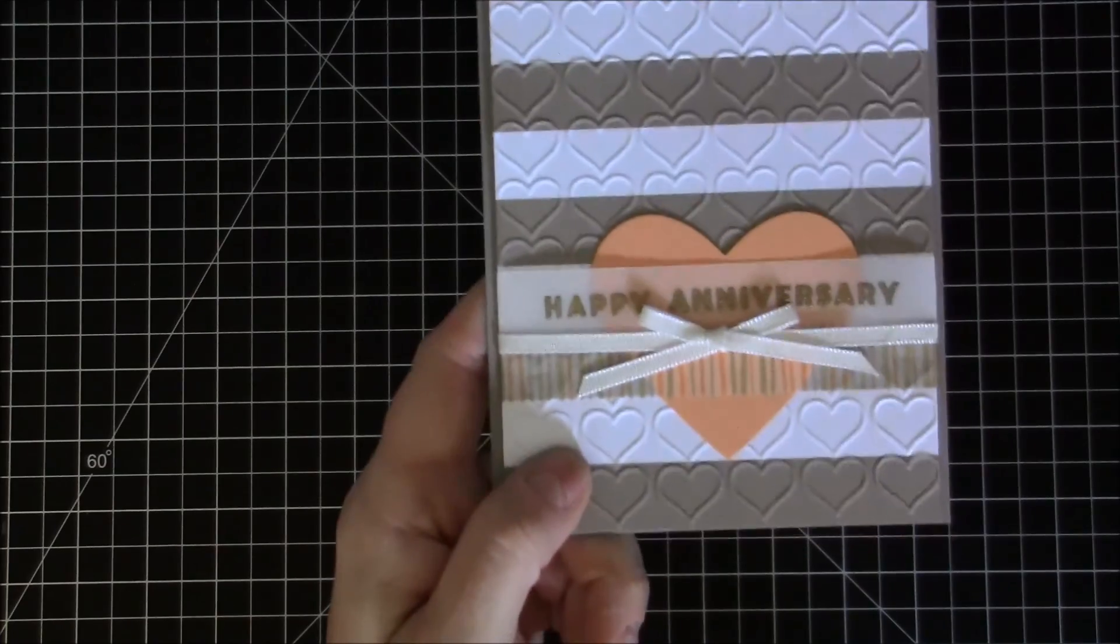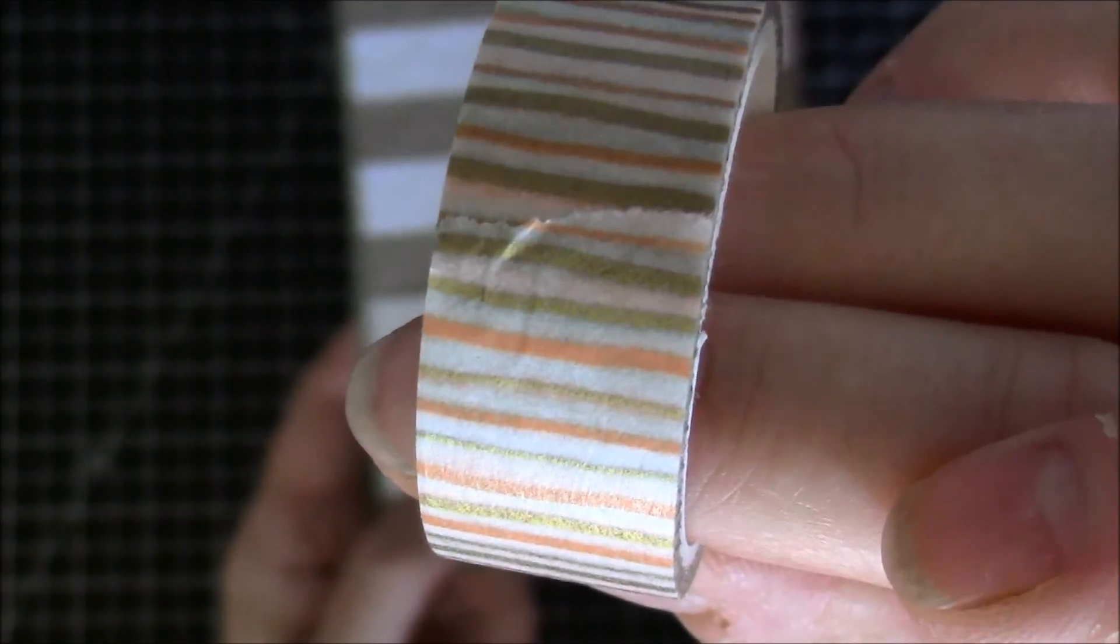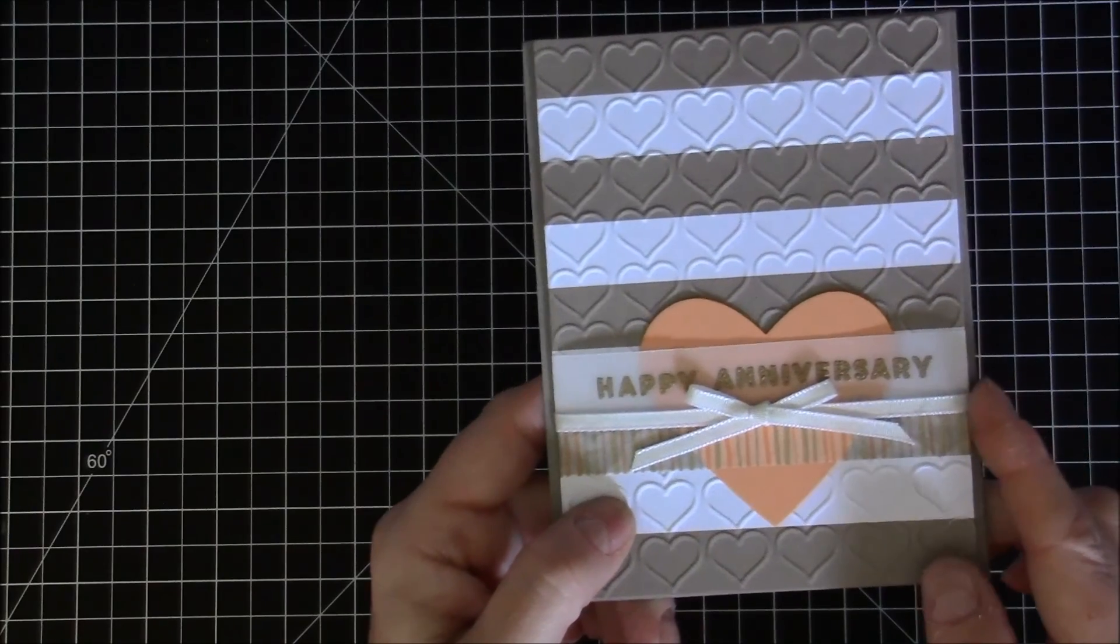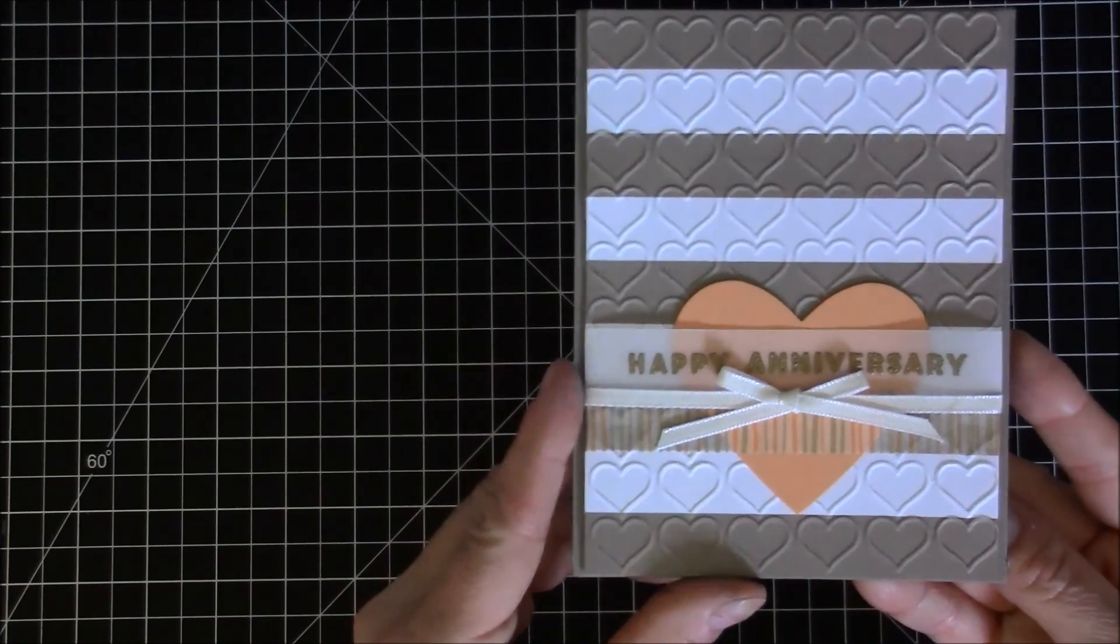I used a little bit of the washi tape that came in the kit. It has the tip top taupe and some gold and a little bit of peach which is a perfect match to the peekaboo peach, so I used that on there and layered those together. Then I just added a little bit of ribbon just to kind of make it a little bit more dressy, a little bit more sweet for a special wedding anniversary. This one I put on tip top taupe cardstock for the card base.